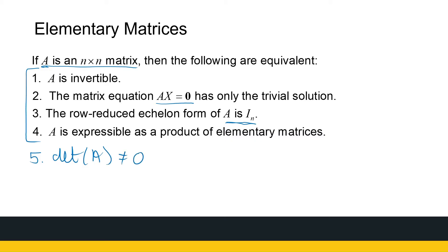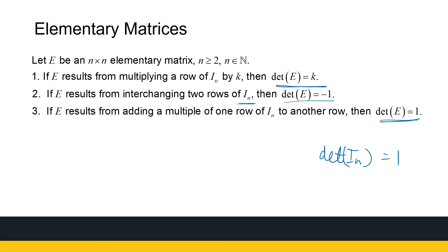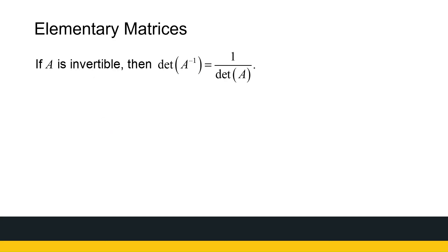That can be added to our equivalence theorem — we can say the determinant of A being non-zero is one more equivalent statement. There are more additions the more you study matrices, but that's one addition. So if A is invertible, the determinant of A is non-zero. And the last theorem here is that the determinant of A times B, if they're the right sizes, is just the determinant of A times the determinant of B.